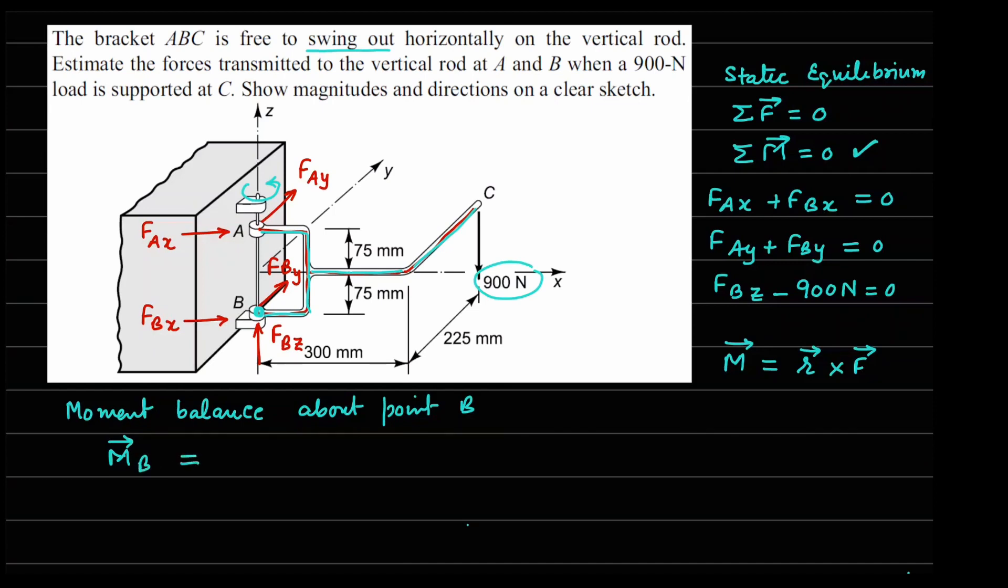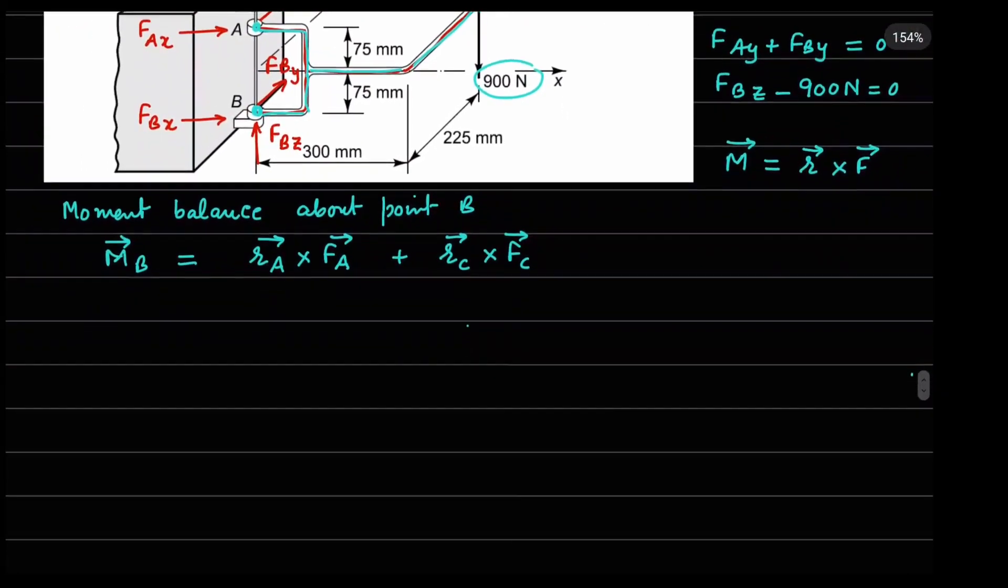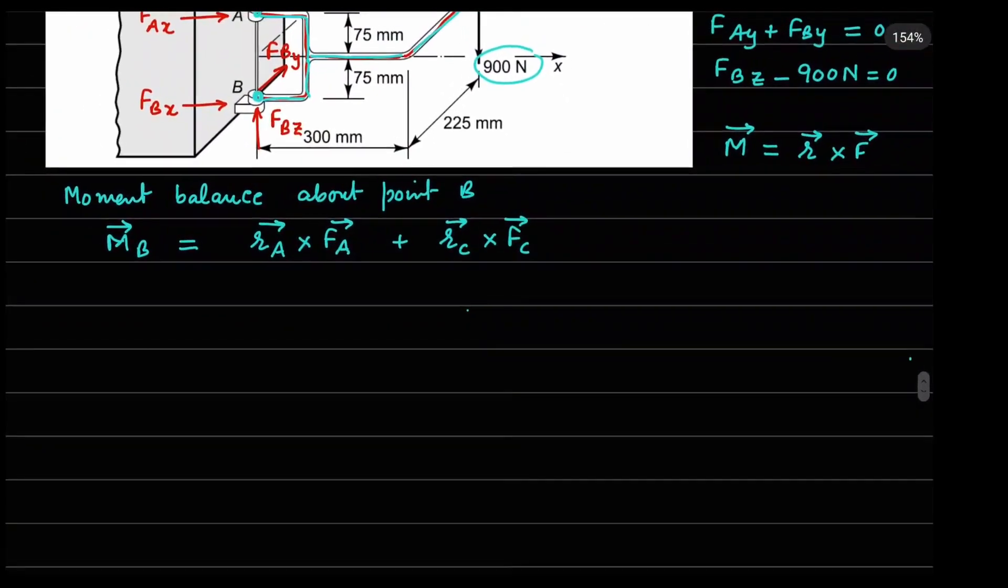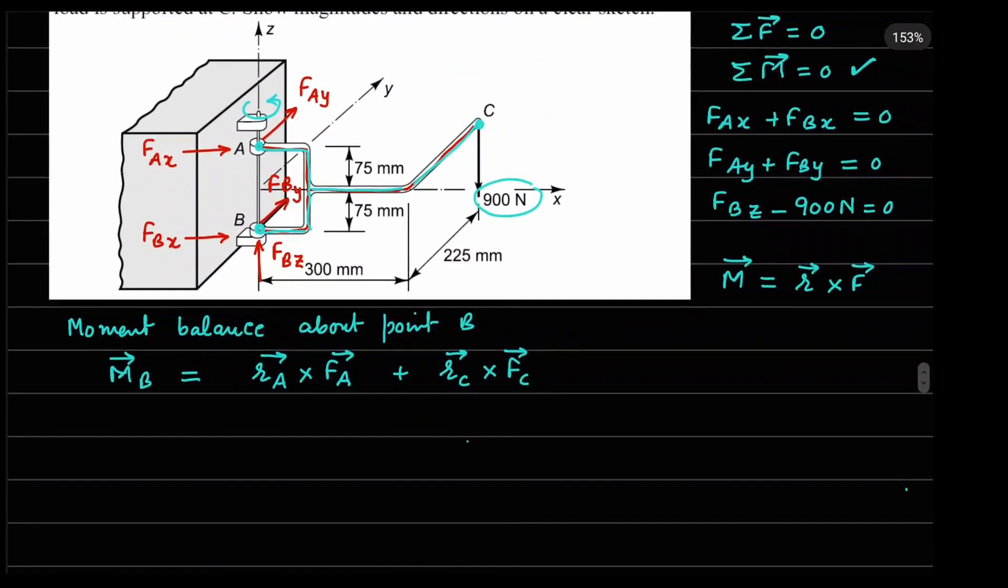Now the moment will come because of the forces that are at point A and point C. So let us write whatever is happening at point A as RA cross FA and in addition to that RC cross FC. Now here we have to remember this RA and RC, they are written with respect to point B.